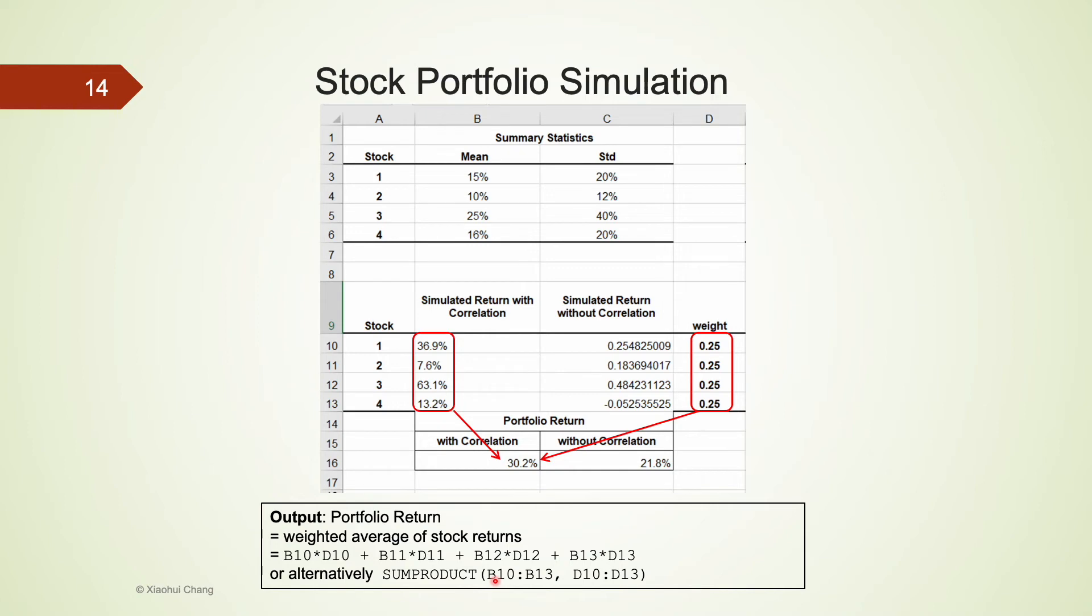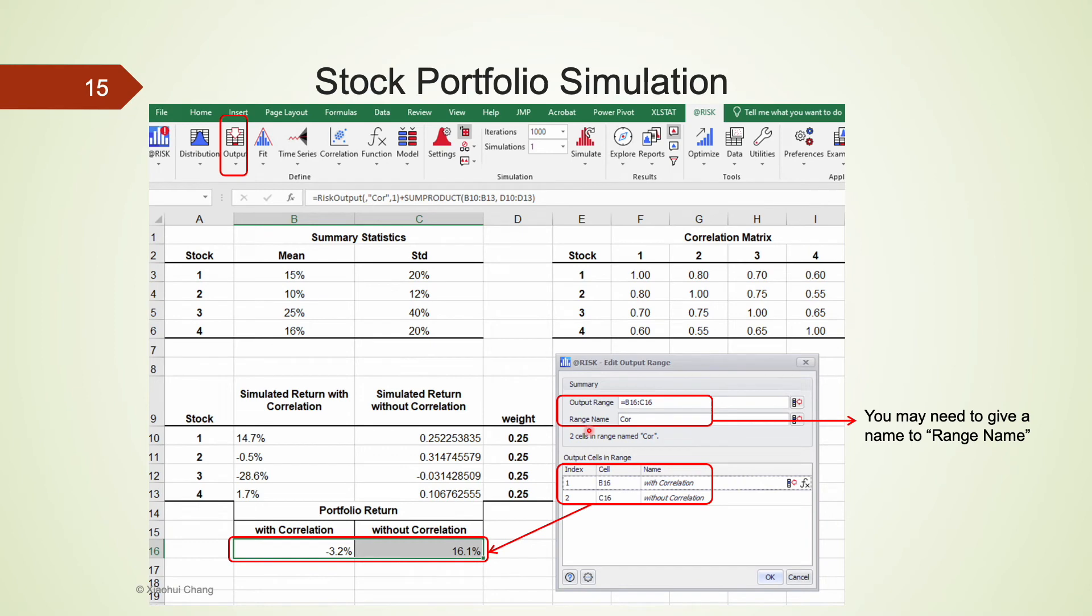To compare the portfolio returns when the correlation is considered versus when the correlation is not considered, I'm going to perform two separate simulations. We can do this easily using at-risk by defining two cells as the outputs of interest. We select both cells C16 and B16 and define both of the portfolio returns as output cells. At-risk will keep track of the values in these cells.